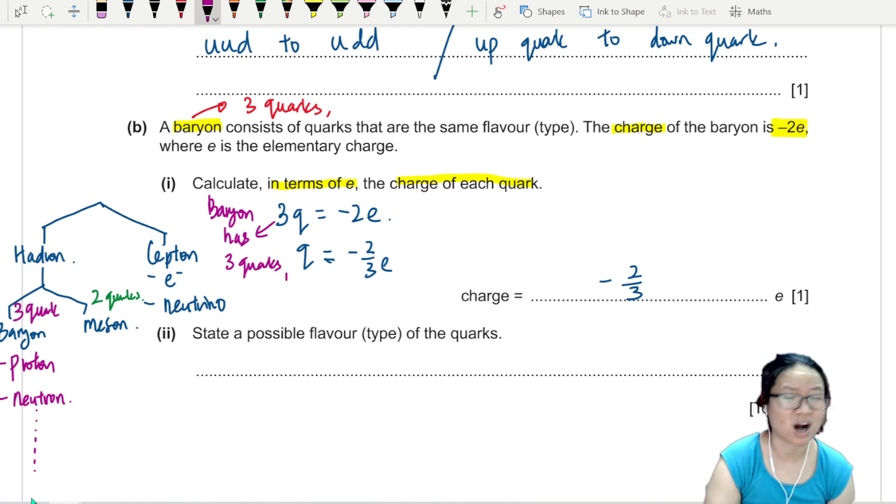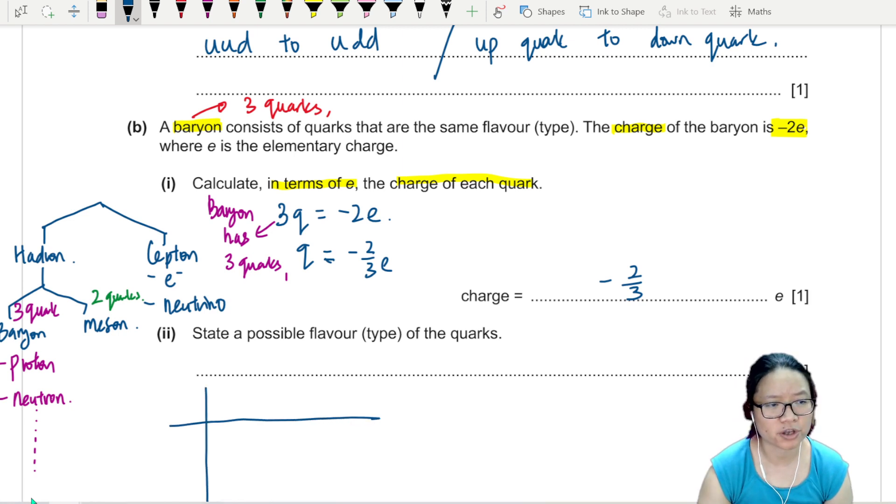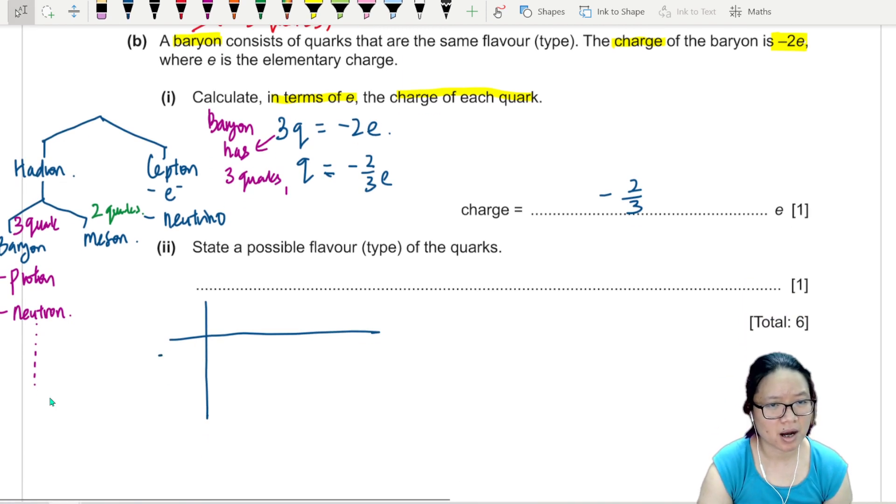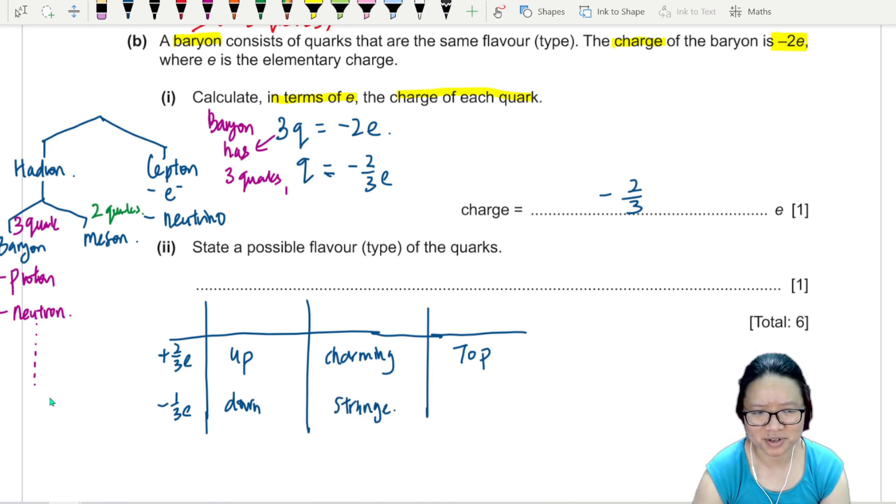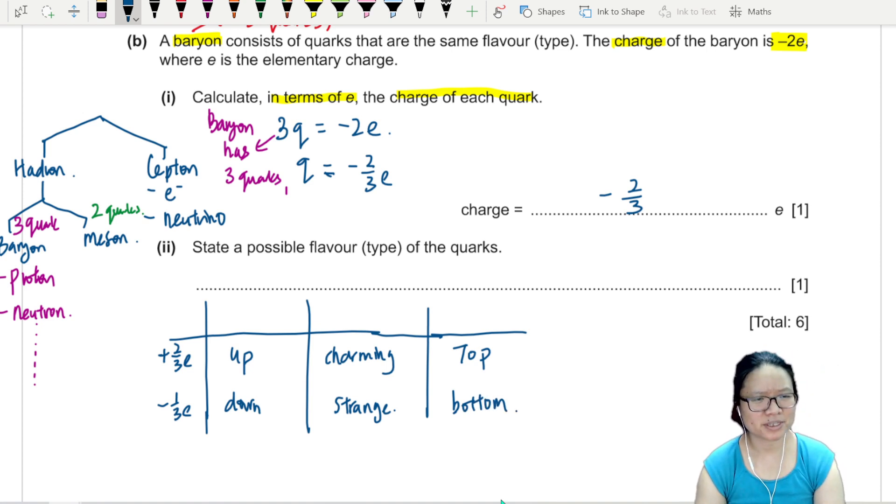What is the possible flavor of the quark? Negative 2/3. I have this table in my brain. Positive 2/3, negative 1/3. Got three generations: up, charm, top. These are all the positive 2/3. Down, strange, bottom. But teacher, this one is positive 2/3. If I want this one to be negative, then how? If I want this to be negative, then this is antiparticle.